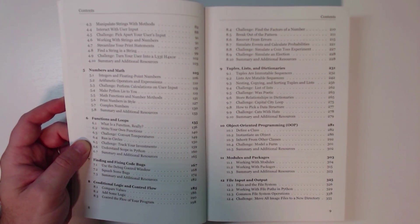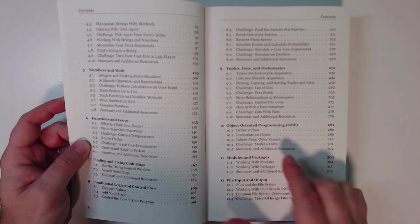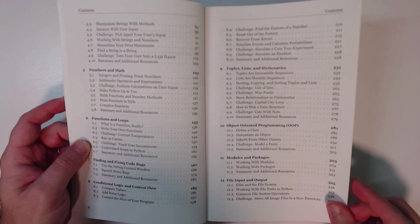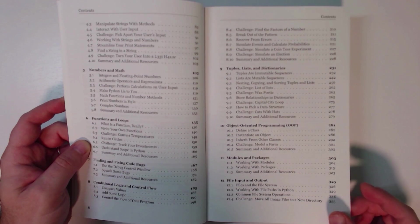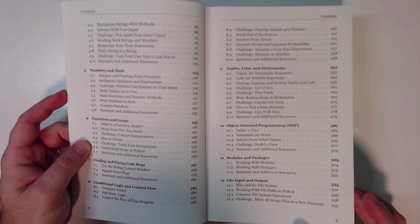After that, we talk about conditional logic and control flow, things like if statements and things like that. We talk about some basic data structures, tuples, lists, and dictionaries, and a very brief introduction to object-oriented programming. After that, we dive into how to organize your code using modules and packages, and then working with file input and output and working with paths and things like that.